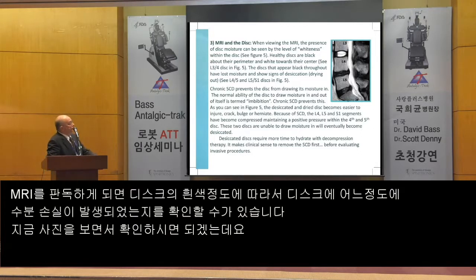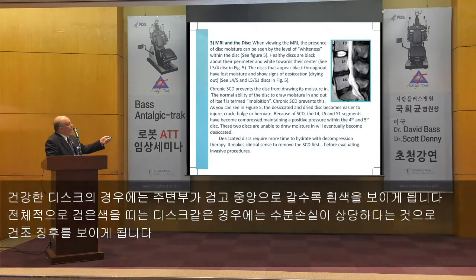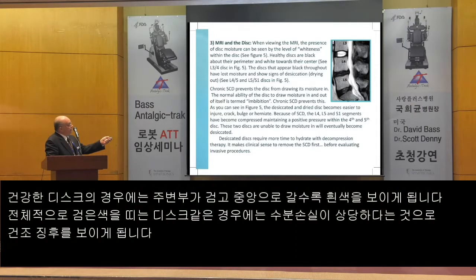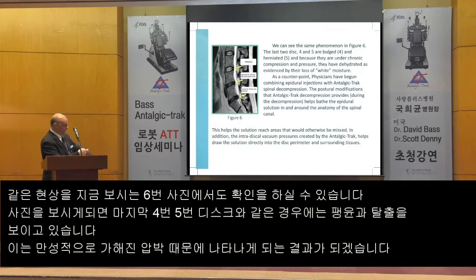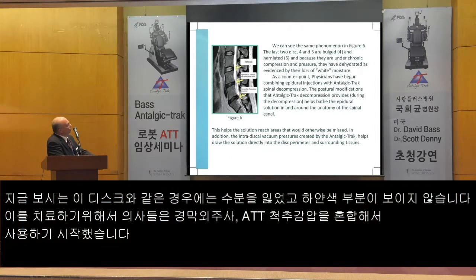MRI and the disc. When viewing the MRI, the presence of disc moisture can be seen by the level of whiteness within the disc. The perimeter of the disc is dark and white toward the center. The discs that appear black throughout in the lower segments are discs that have lost their moisture and show signs of desiccation — a term used for the drying out of these discs. In Figure 6, the last two discs, L4 and L5, are bulged, and the last disc is herniated. Because they are under chronic compression and pressure, they have become dehydrated, as evidenced by the loss of the white image on the MRI scan.